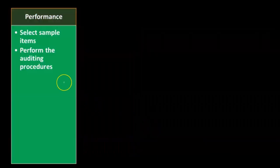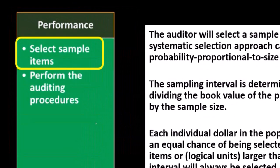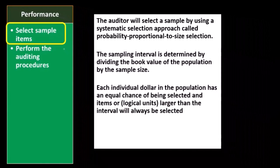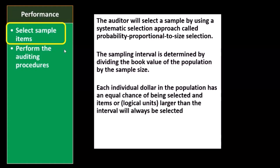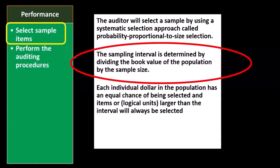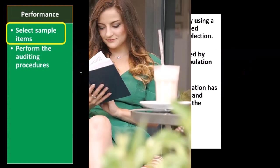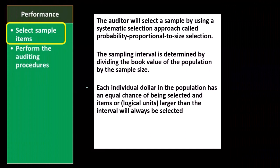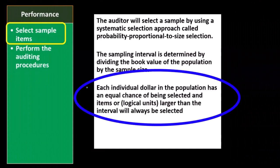Next we go to the performance phase. We have selecting sample items and performing the auditing procedures. The auditor will select a sample by using a systematic selection approach called probability proportional to size (PPS) selection. The sampling interval is determined by dividing the book value of the population by the sample size. Each individual dollar in the population has an equal chance of being selected.